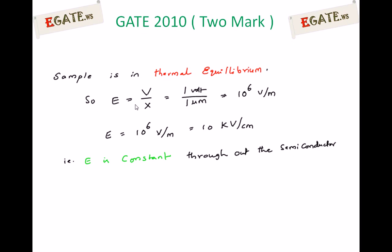E = V/x = 1 volt / 1 micrometer = 10^6 volt per meter. Converting meters to centimeters: 1 meter = 100 cm = 10² cm, so 10^6 / 10² = 10^4 volt per centimeter, which is 10 kV/cm.